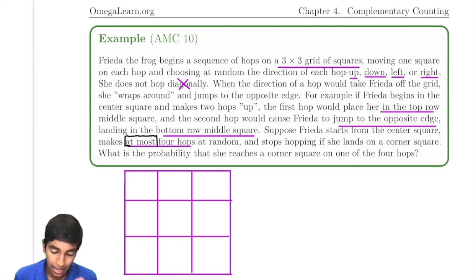Yes, actually. Because if Frida makes at most four hops to reach a corner square, then we can just count the number of ways that Frida does not reach the corner square in any of the four hops. So let's find the number of ways that Frida can make four hops without reaching a corner square.